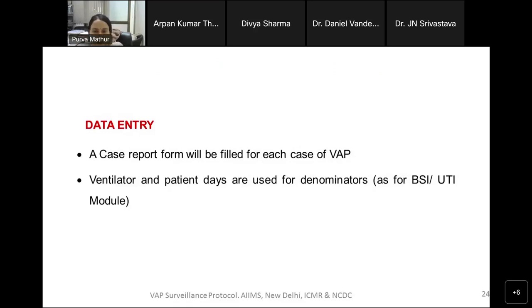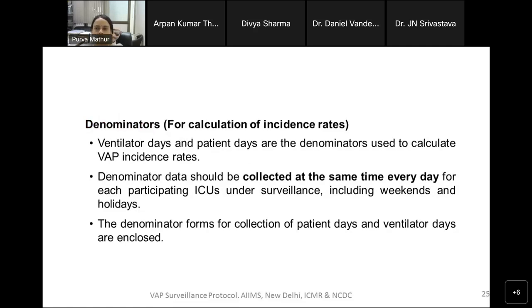For data entry, as for BSI and UTI, you will fill a case report form for each identified case of VAP. The denominator data here is ventilator days and patient days. You can have one denominator form with columns for patient days, central line days, urinary catheter days, and ventilator days. The denominator data should be collected at the same time every day for each participating ICU, including weekends and holidays. Denominator forms for collection of patient days and ventilator days are included in the SOP which will be provided.